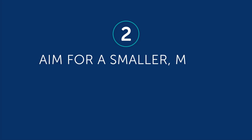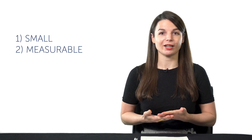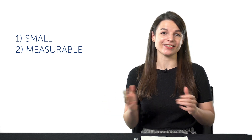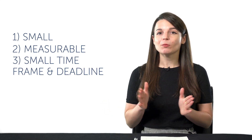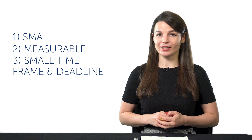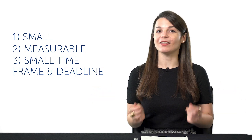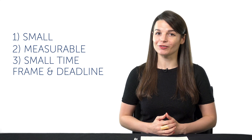Two, aim for a smaller, more realistic goal. With that last goal in mind, think about how you might make a new, easier goal. Remember, your goal should always be: one, small; two, measurable — for example, one minute of conversation, 100 words, 10 grammar rules, 10 lessons, etc.; and three, have a small timeframe with a deadline. In other words, it's a goal for the week or for the month, and the deadline is January 31st, for example.